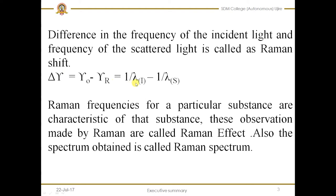Delta nu is given by 1/lambda_i minus 1/lambda_s, where i represents the incident light and s represents the scattered light. This is the Raman shift. The Raman frequencies for any particular substance are characteristic of that substance. These observations made by Raman are called the Raman effect, and the spectrum obtained is called the Raman spectrum.